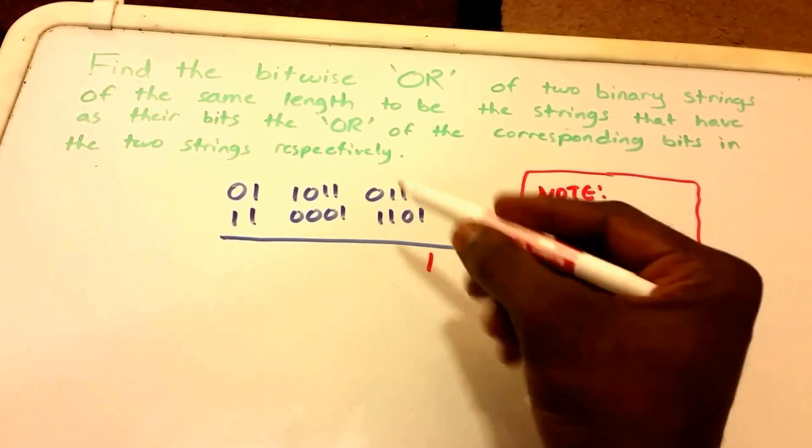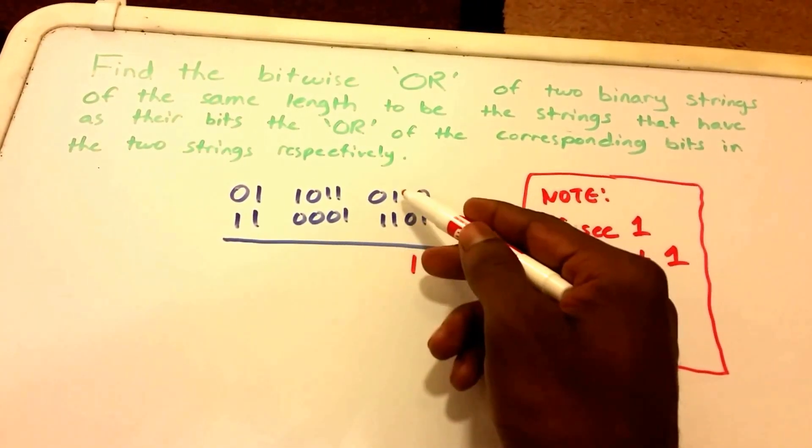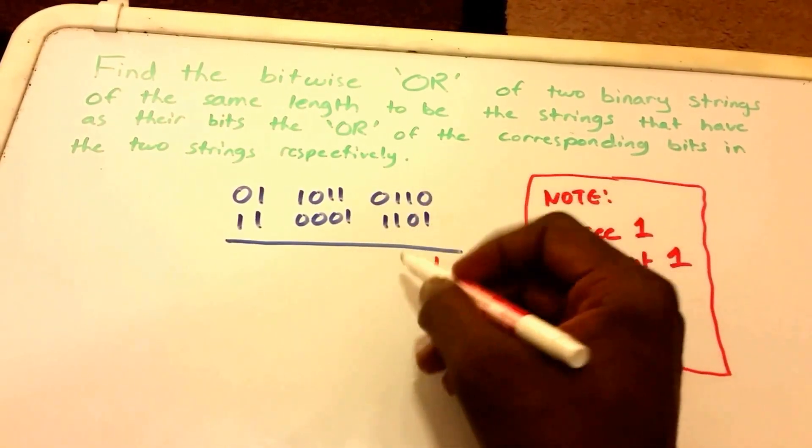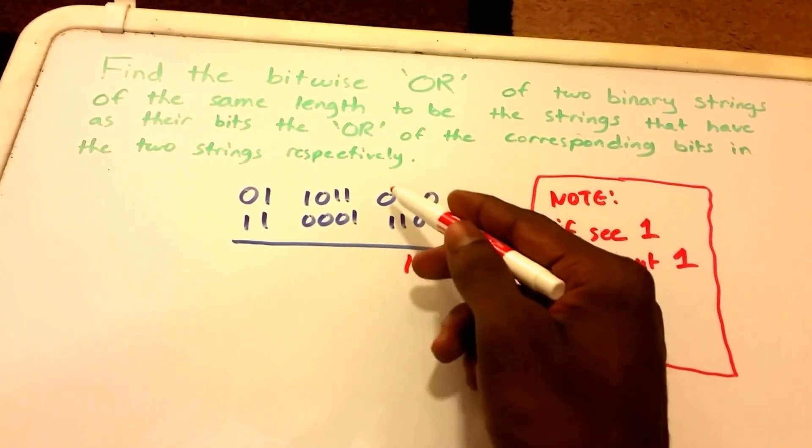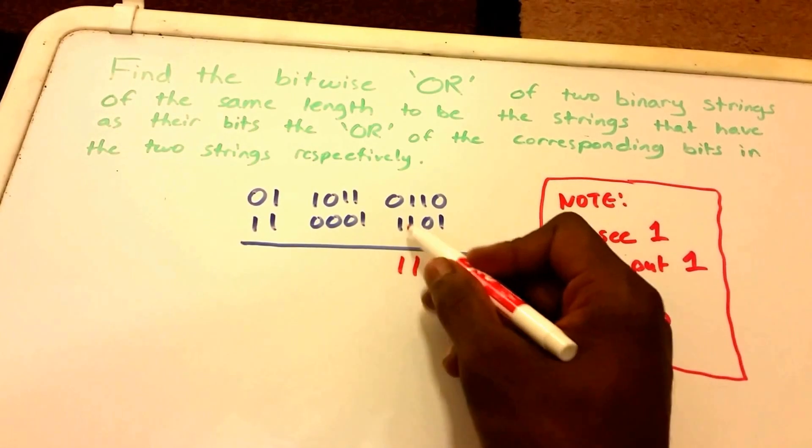We have 1, 0, we saw a 1, we put 1. We have 1, 1, we saw at least 1, so we put 1. 0, 1, we're gonna put 1 because we see a 1 here. 1, 1, we're gonna put a 1 because we saw at least 1. 1, 0, we put a 1.